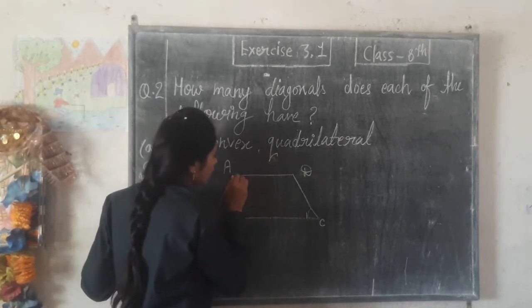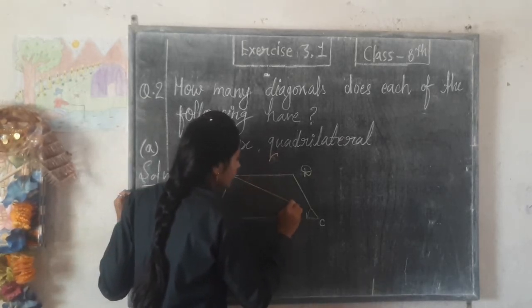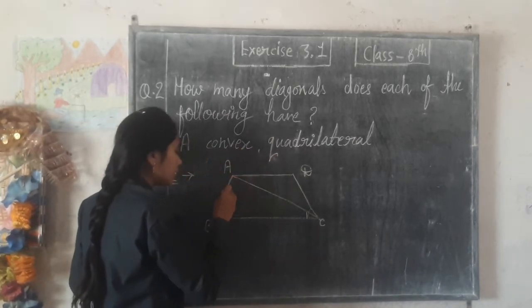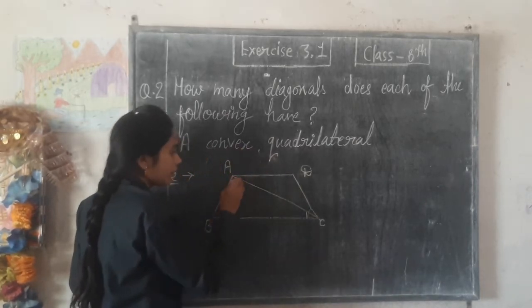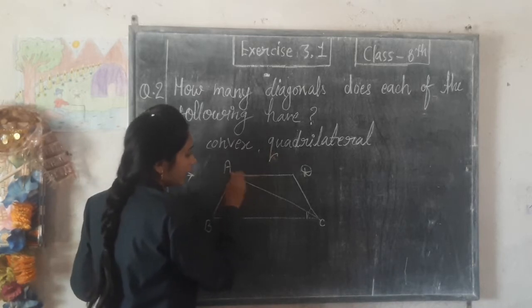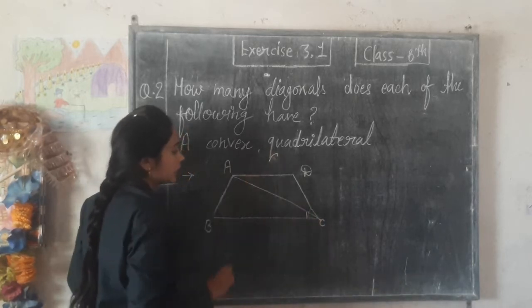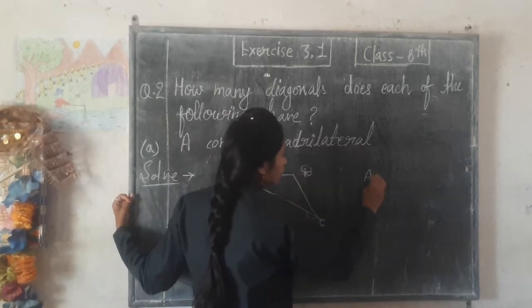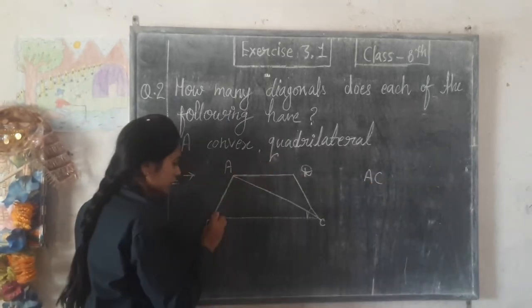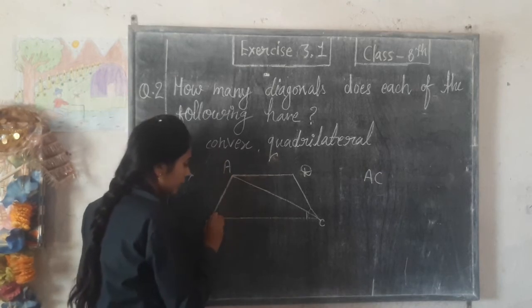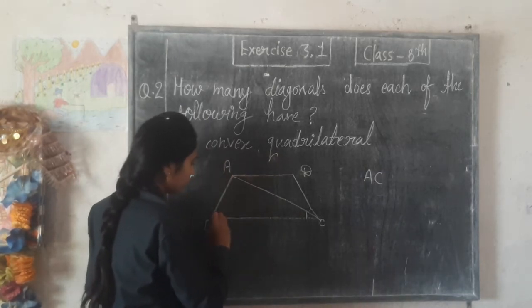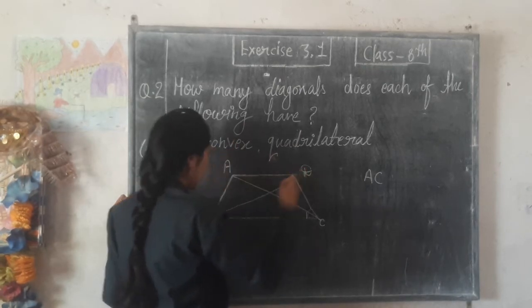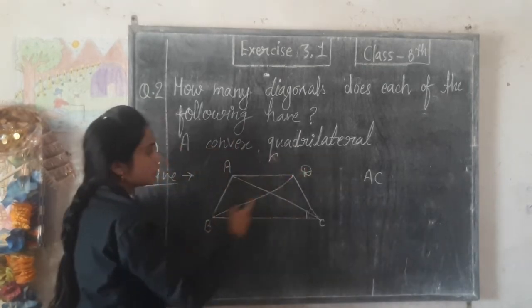First diagonal: from vertex A, going to C. So the first diagonal is AC. Next, from B going to D — the answer is diagonal BD.